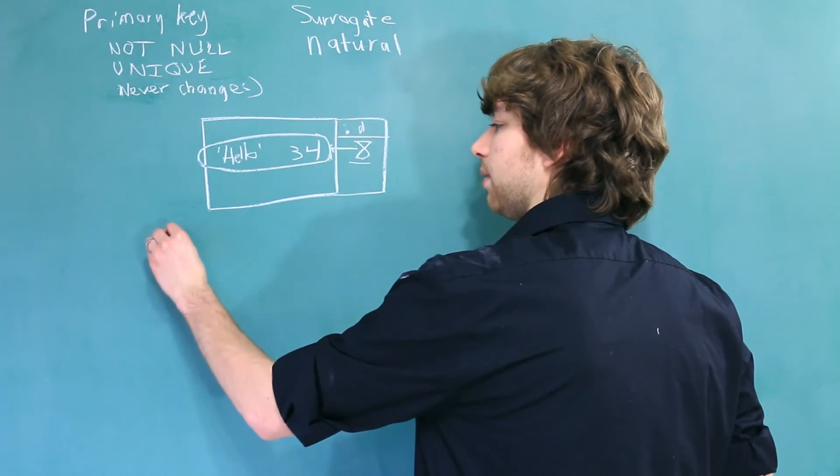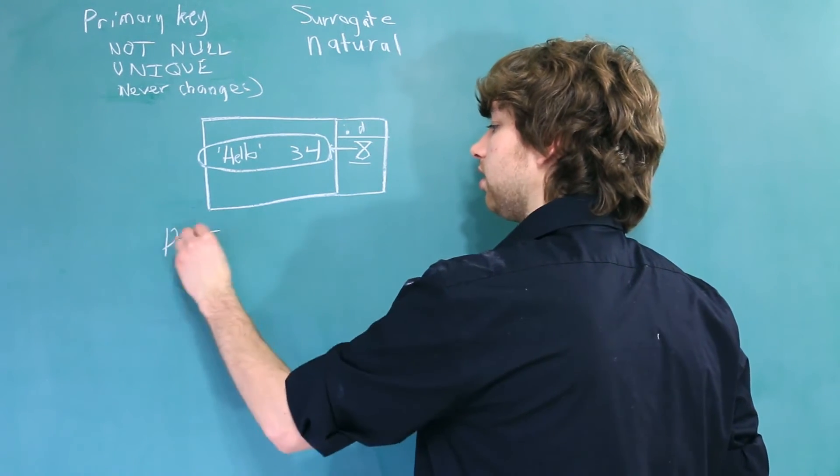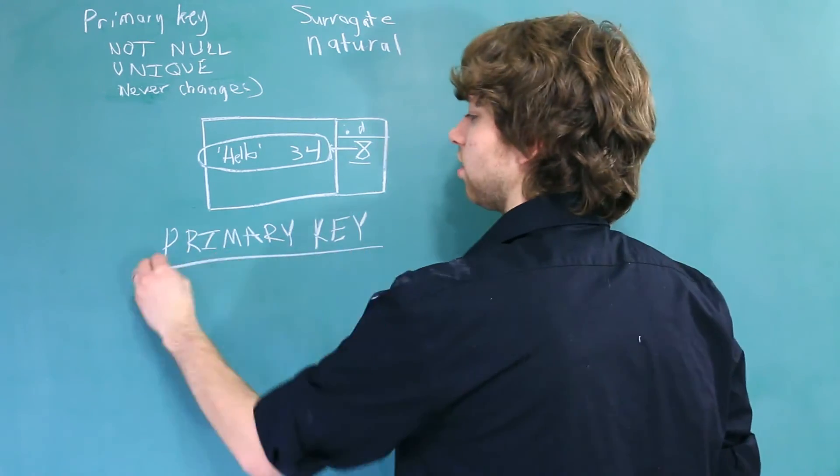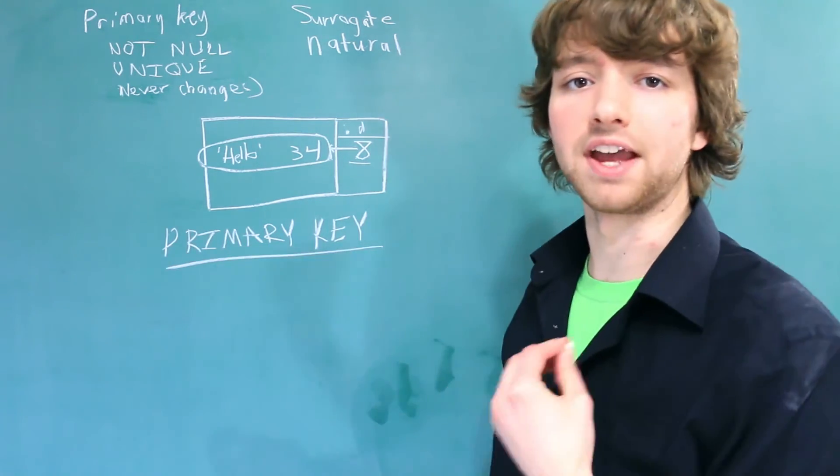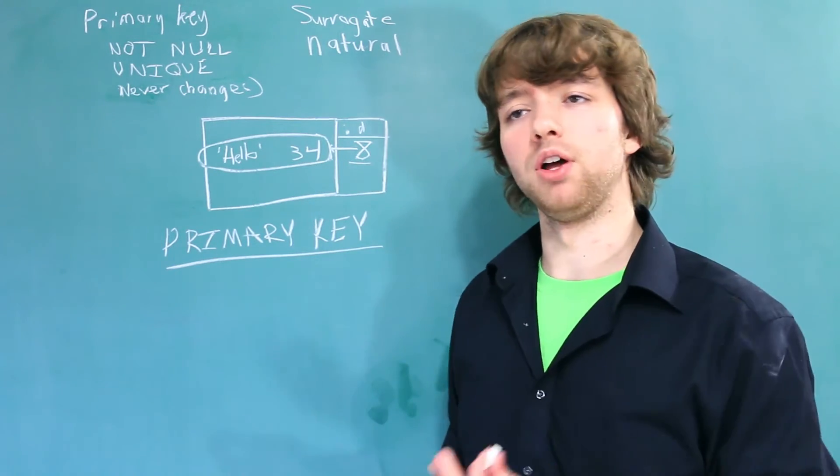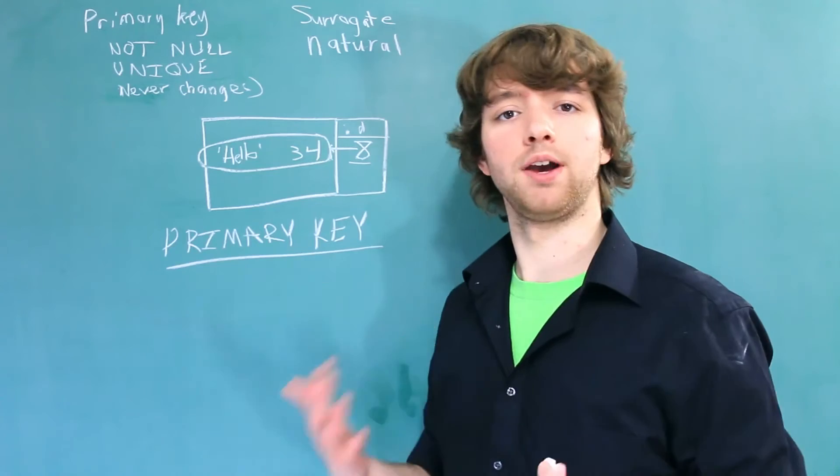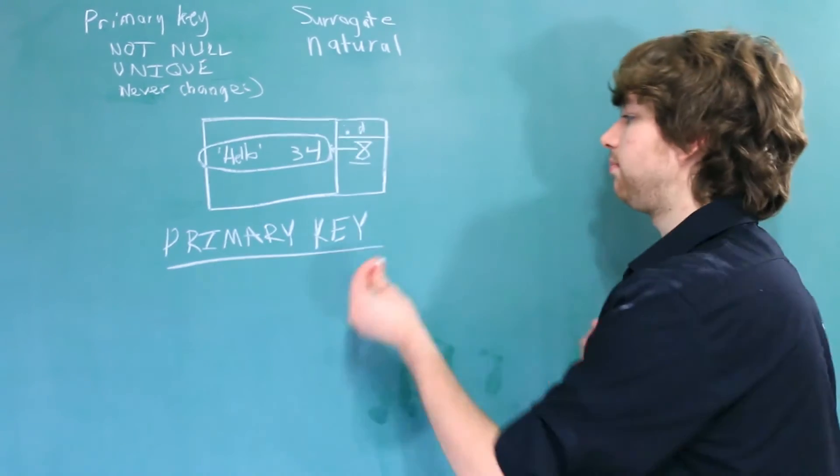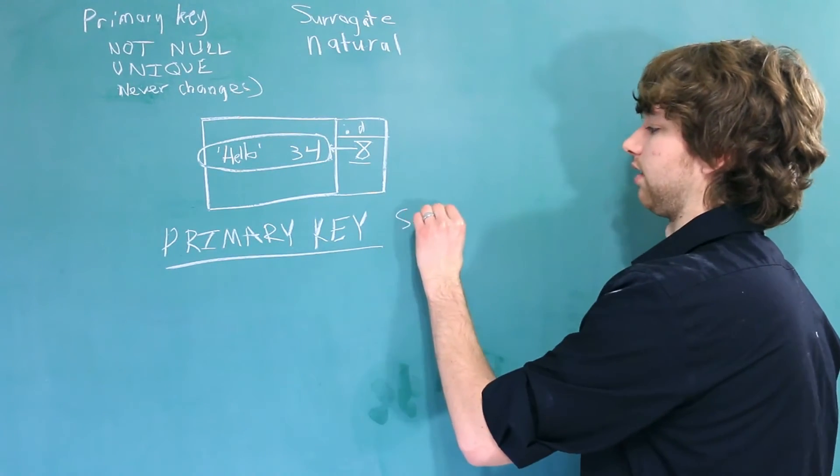You just use primary key keyword. So when you create the database, you're going to say primary key and you're going to use this right after you create that column. And once we get into the create table statement, that's going to make a whole lot more sense. But that's literally all you have to do. You don't have to say primary key surrogate or anything like that.